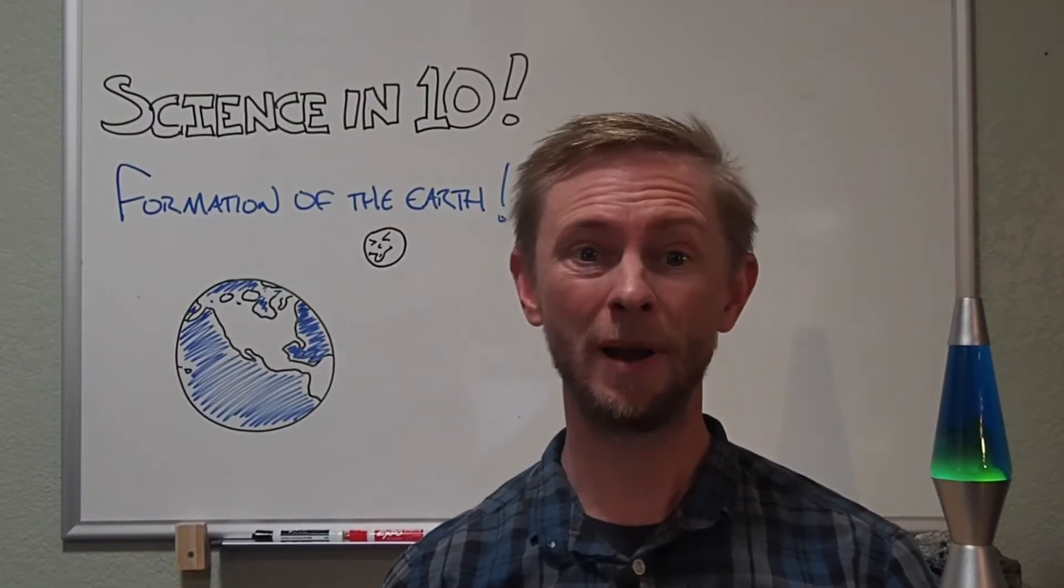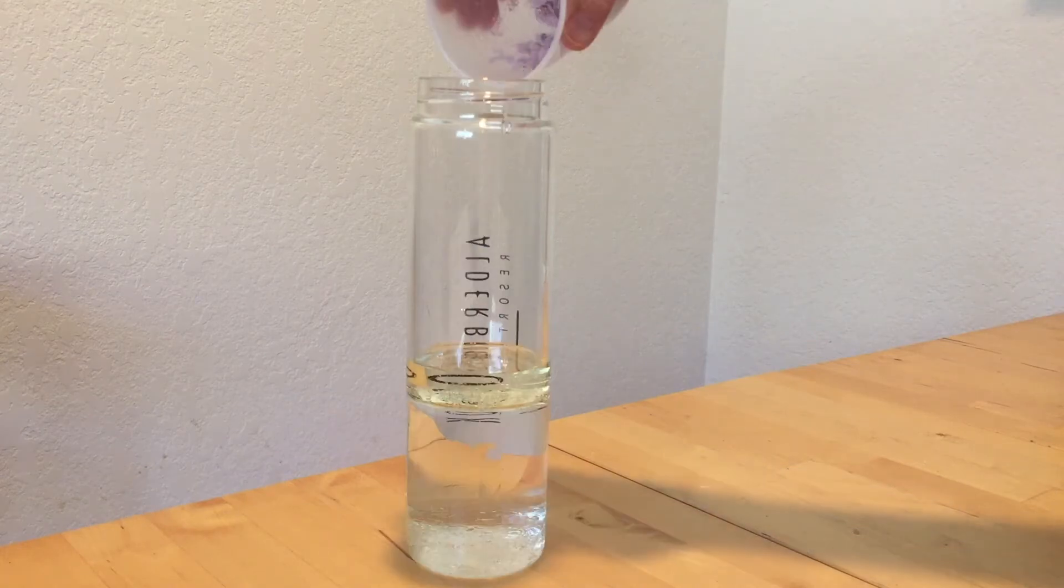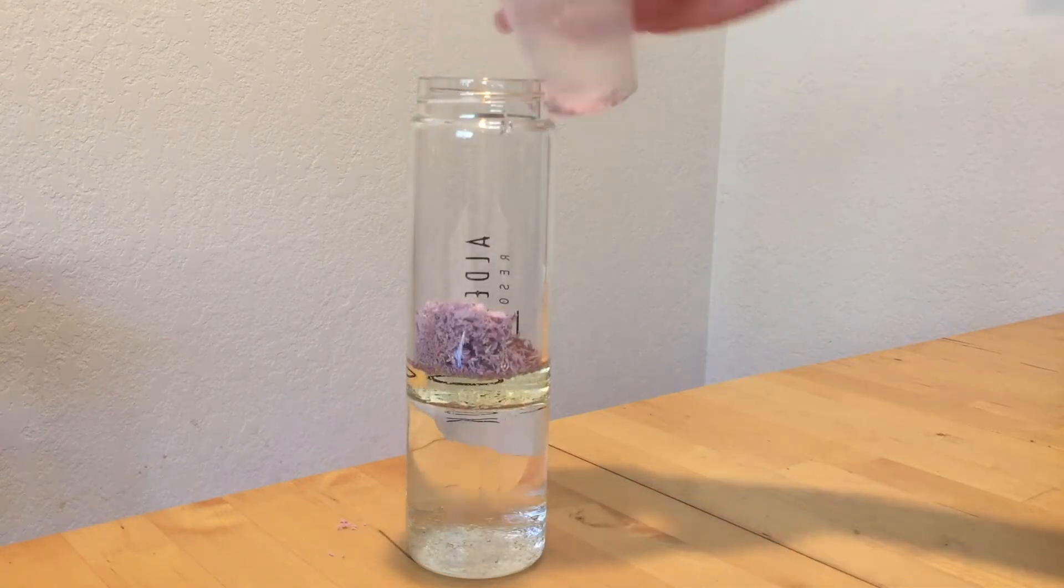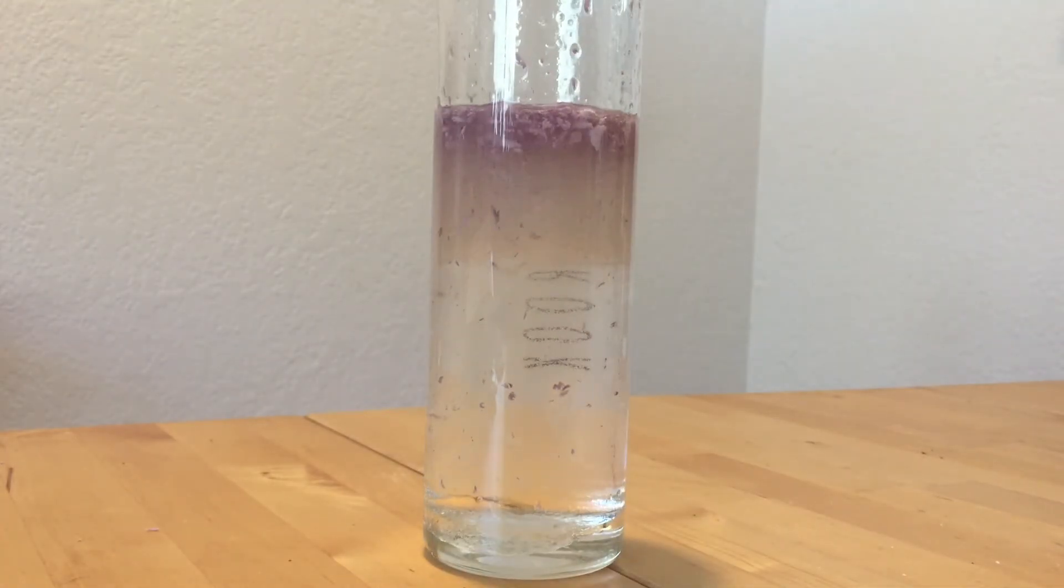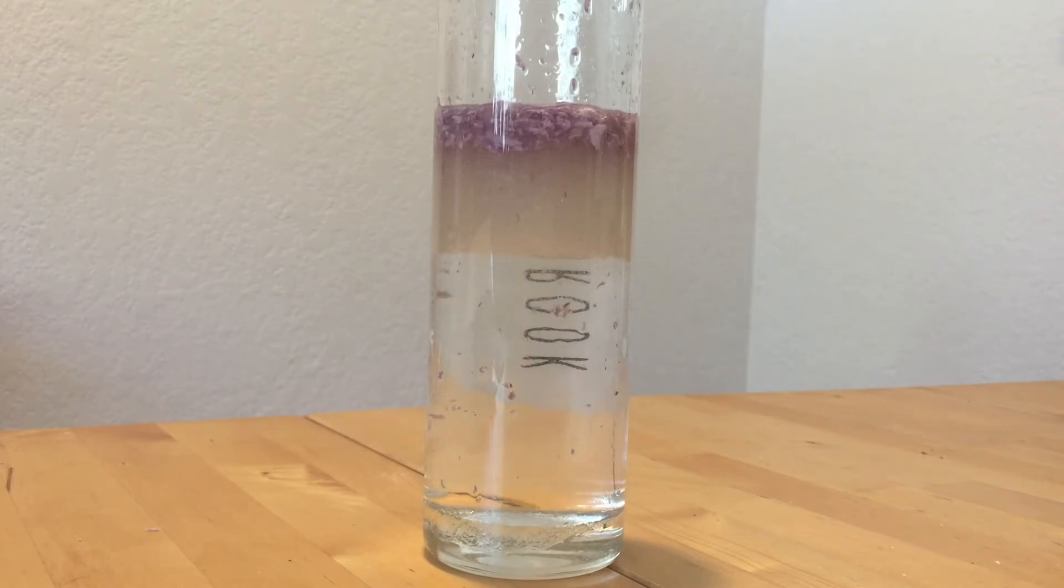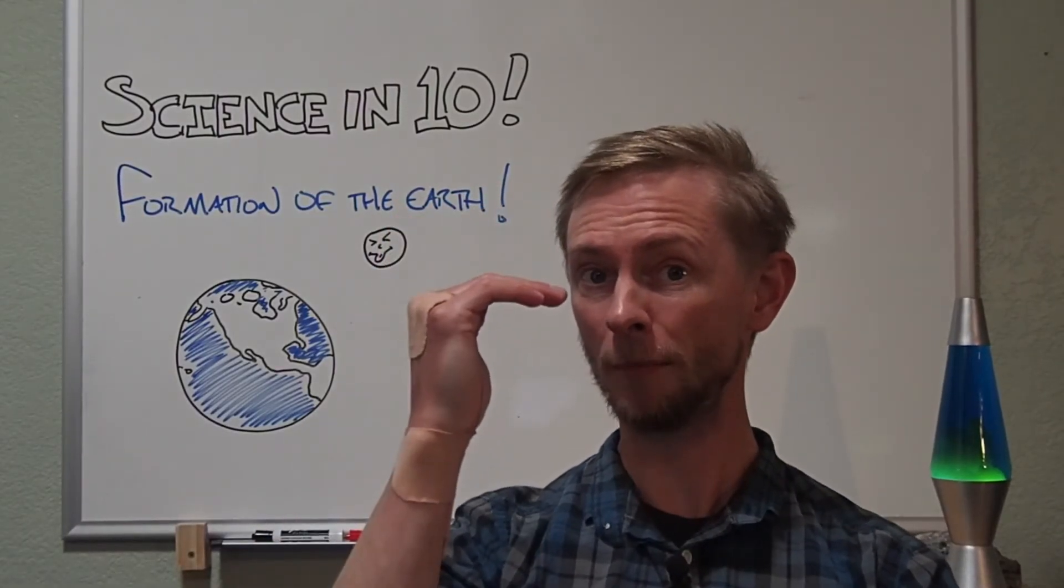To illustrate this process, imagine a clear cylinder filled with cooking oil, water, and a bunch of little bits of insulation foam. Shake up the cylinder to give the contents a good mix. Wait a little bit, and the different materials will settle out according to their densities, with the denser material on the bottom, and the least dense floating towards the top.